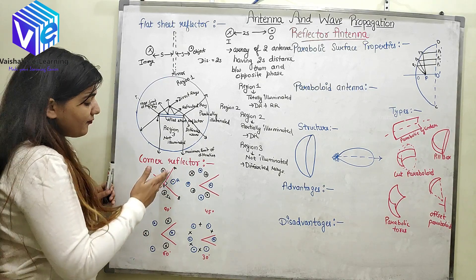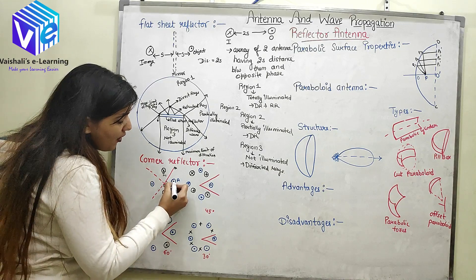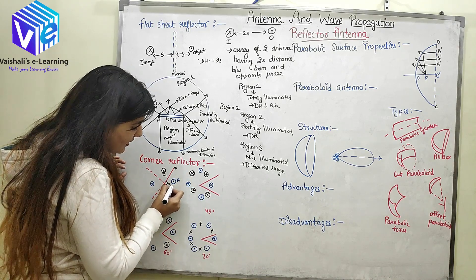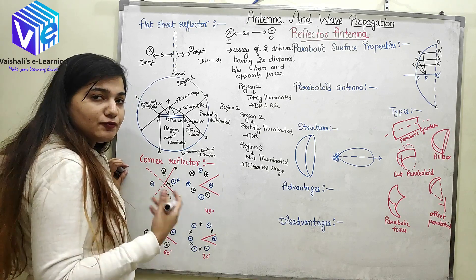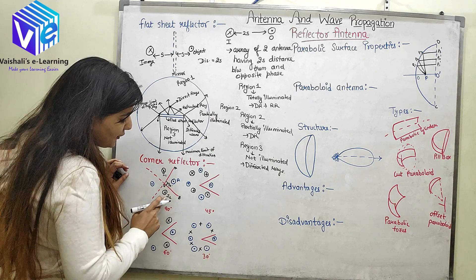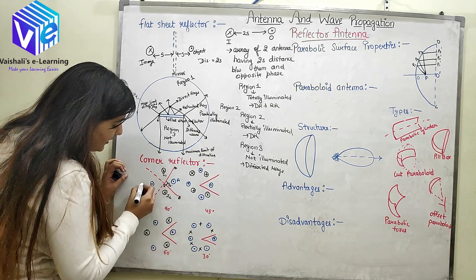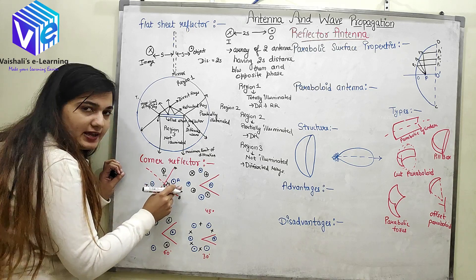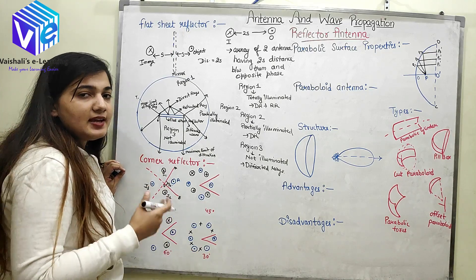Moving to the corner reflector: it consists of two flat sheets connected at some angle. Taking the angle to be 90 degrees, if the object antenna is A, due to one surface an image I1 is produced of opposite nature to A. Similarly, I2 is produced due to the other surface. Due to both surfaces combined, a third image I3 is produced, which is of opposite nature to I1 and I2, making I3 of the same nature as A. The combination of all four antennas in the array gives the final output radiation pattern.